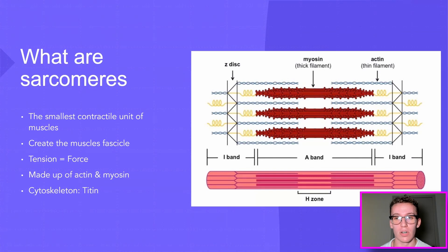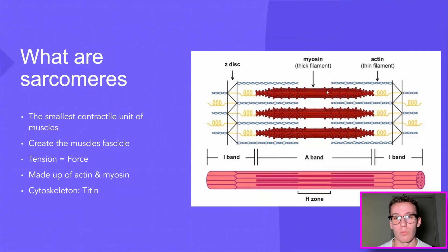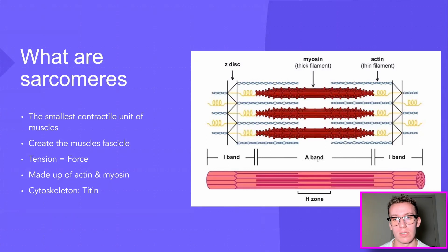Sarcomeres are made up of myosin and actin. You can see the thick filament, which is the red thick area in the middle, and the actin, which is the blue DNA-looking filaments on the exterior. They combine together, which allows the sarcomere to shorten and lengthen — basically the shortening of the A band, which you can see in the graphic. There are also passive elements inside sarcomeres like titin, represented by the yellow spring on the graphic to the right.